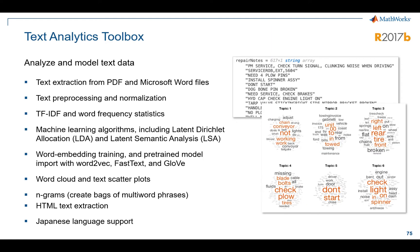Text Analytics Toolbox came out a couple of releases ago. It allows you to do some really cool things with text — specifically extract data from PDF and Word files, and then apply machine learning algorithms to that data. So if you have text as data, this can be a really powerful tool in your toolbox.